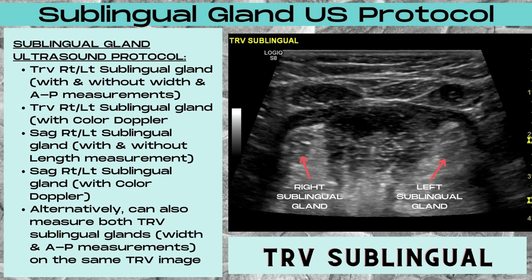The sublingual glands are usually not included as part of a thyroid ultrasound protocol like the other salivary glands, because they are so difficult to visualize on ultrasound. Typically they're imaged only if salivary gland pathology is suspected. A sublingual gland ultrasound protocol includes obtaining a transverse right and left sublingual gland with and without width and AP measurements, a transverse right and left sublingual gland with color Doppler, and a sagittal right and left sublingual gland with and without a length measurement, as well as a sagittal right and left sublingual gland with color Doppler.